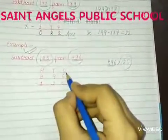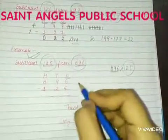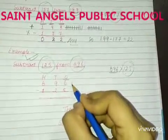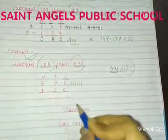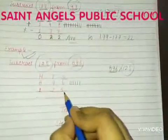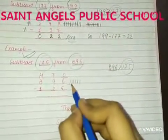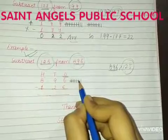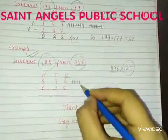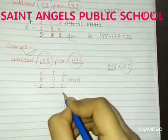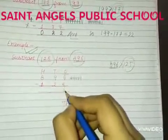First, subtract the ones place digit, that is 6 minus 5. Draw 6 lines in front of 6. We have to subtract 5, so cut 5 lines out of the 6 lines drawn. Count all remaining lines — there is 1. Write 1 here. So, 6 minus 5 is equal to 1.